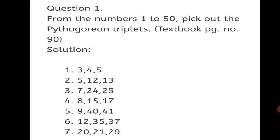The Pythagorean triplets are: 3, 4, 5; 5, 12, 13; 7, 24, 25; 8, 15, 17; 9, 40, 41; 12, 35, 37; and 20, 21, 29. All these sets of numbers are Pythagorean triplets. If you construct a triangle with these sides, it will be a right-angled triangle.